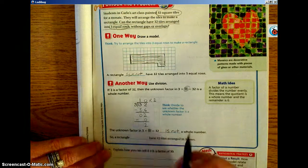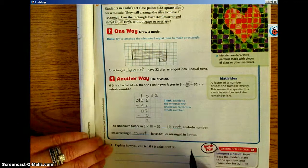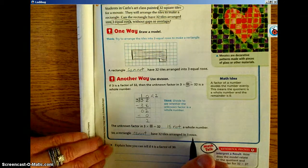So a rectangle cannot, we already decided this on the last problem, have 32 tiles arranged in 3 rows.